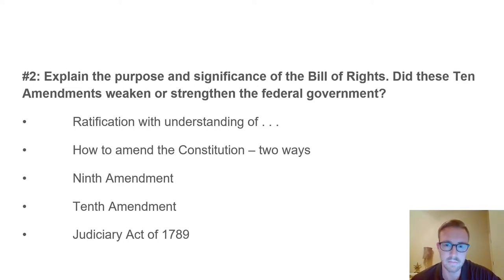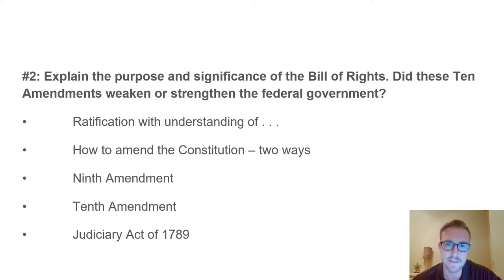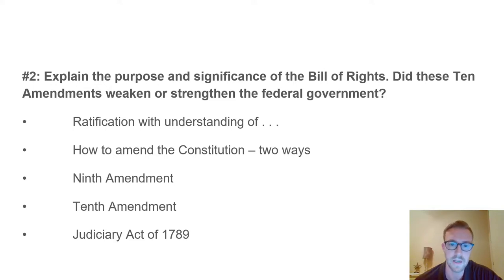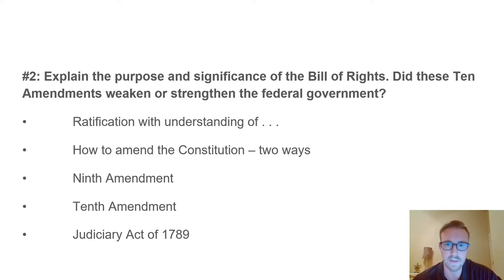There are two ways to amend the Constitution of the United States, as laid out in Article 5. You can either go through Congress to get those amendments passed, or you can go directly to the states and have the states amend the Constitution around Congress. That second option was put in there by George Mason at the Constitutional Convention.